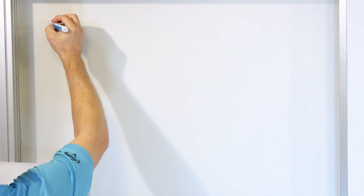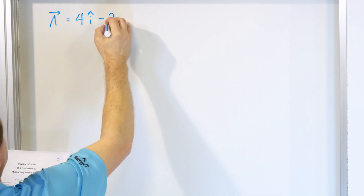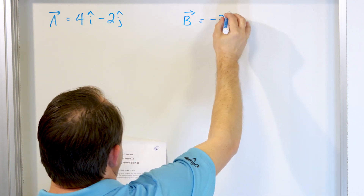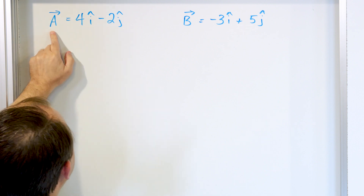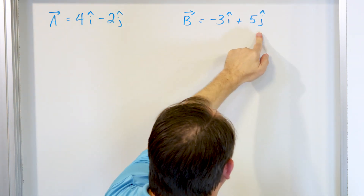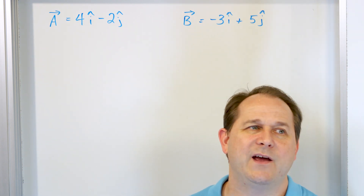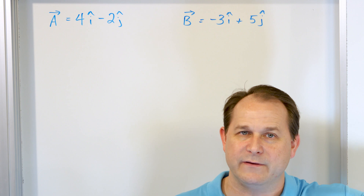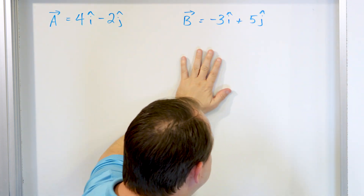We're going to write down first what we are given. Vector A is equal to 4 times i-hat minus 2 times j-hat. And vector B is equal to negative 3 times i-hat plus 5 times j-hat. Vector A is in the XY plane — this is the X component and this is the Y component, with no Z component. Vector B is also in the XY plane. In general these vectors can have three components X, Y, and Z, and in higher-level topics like relativity and quantum mechanics, you can have a time component as well. But let's just consider these existing in the XY plane with no Z components.